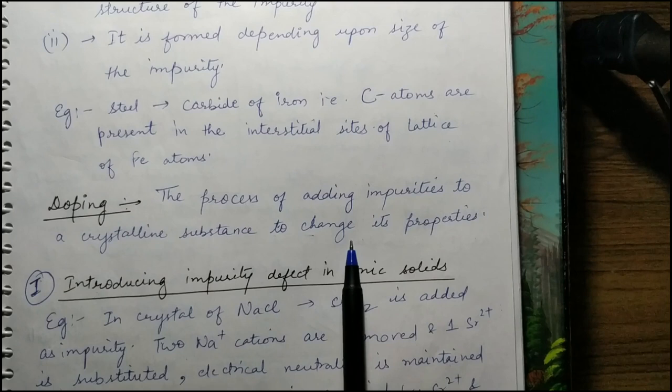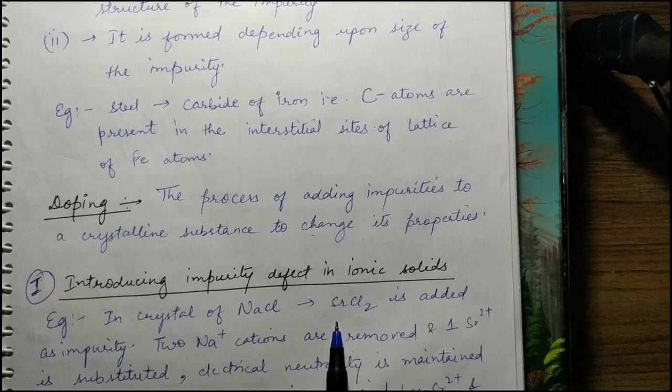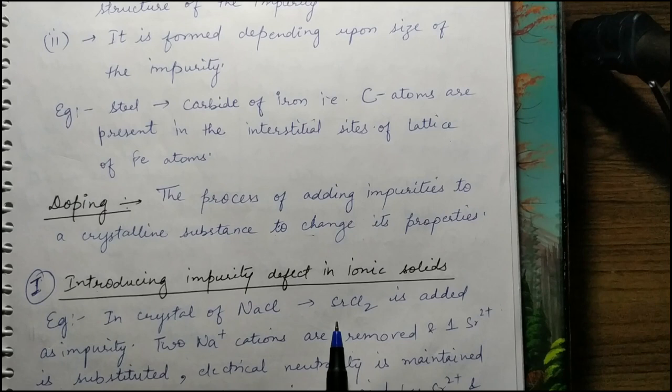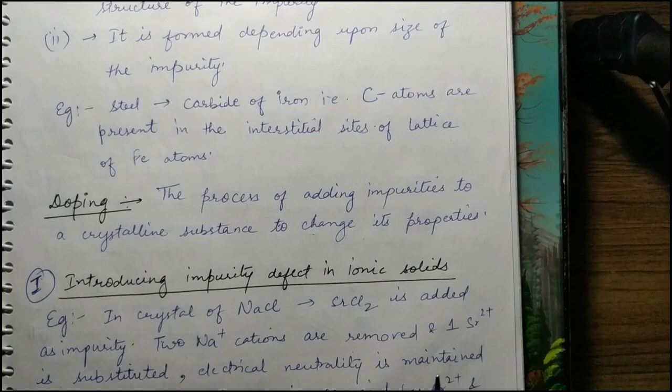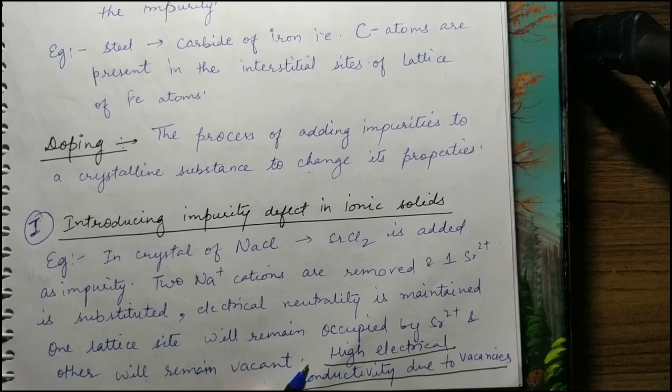The next defect is impurity defect, mainly through doping — adding impurities from outside. We studied impurity defect in both ionic and covalent solids. In ionic solids, for example in a NaCl crystal, if we replace Na⁺ with strontium (Sr²⁺): two sodium cations are replaced by one strontium cation. Electrical neutrality is maintained but one lattice site remains vacant. These vacancies enable electrical conductivity.